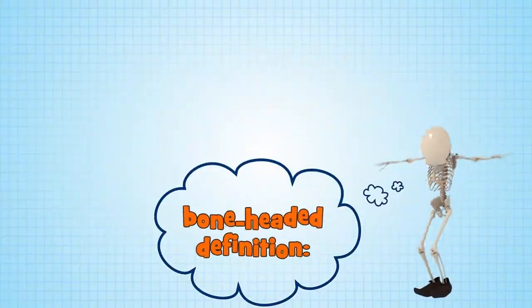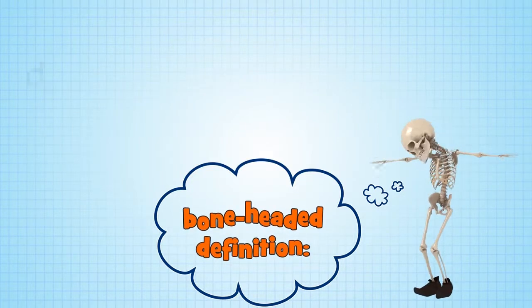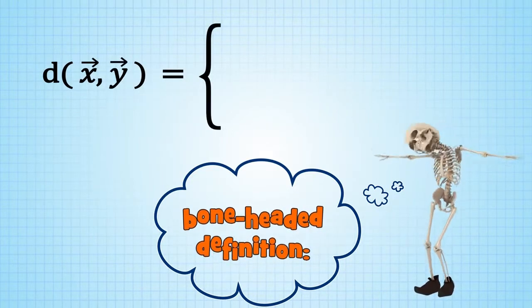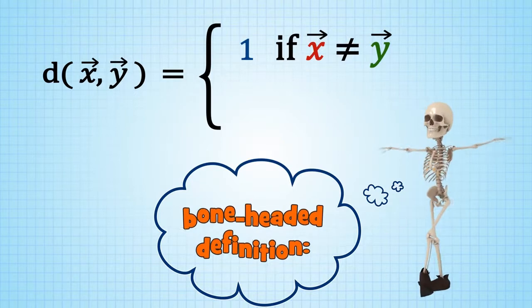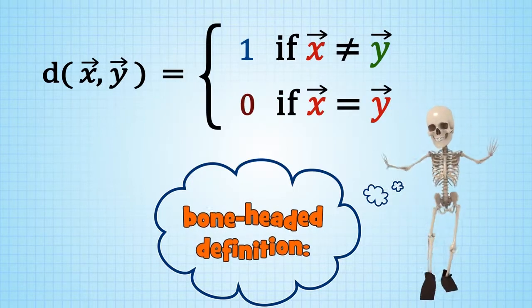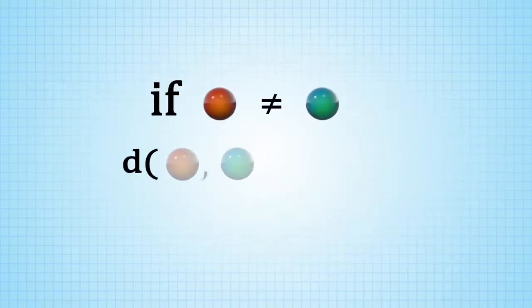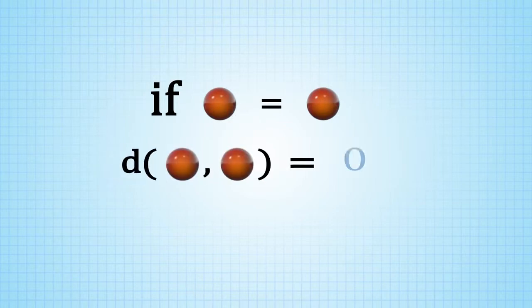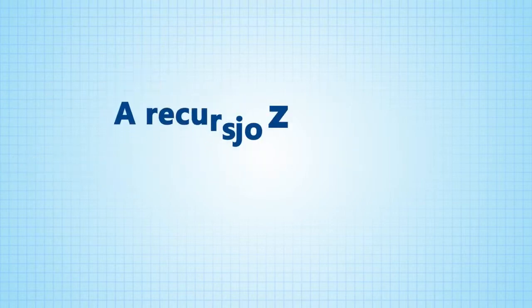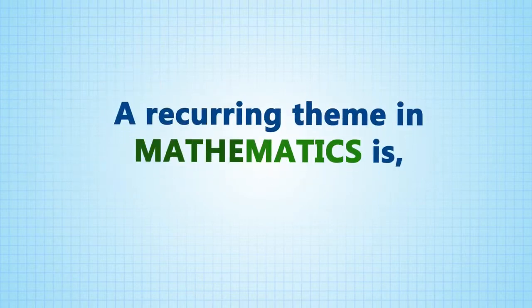We could have even given d a completely boneheaded definition: d(x,y) equals 1 if x does not equal y and equals 0 if x equals y. In other words, this distance function distinguishes one point from another. A recurring theme in mathematics is...